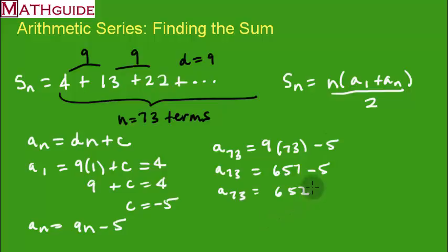So we throw this all into a calculator now to find the sum of the first 73 numbers. N is 73. Our first term is 4. Our last term we just found is 652. And we now divide this all by 2. You crank this out with the calculator.